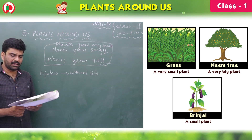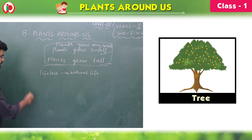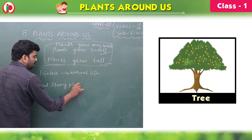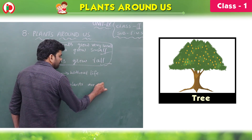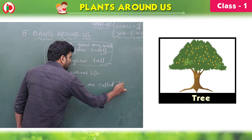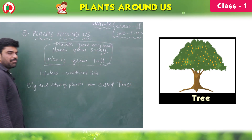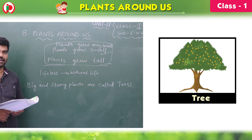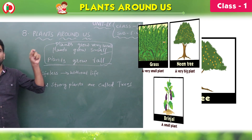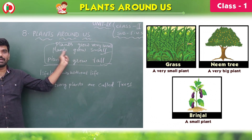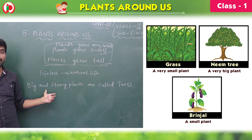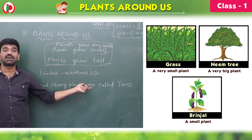Some plants are very big. Big and strong plants are called trees — like banyan tree, mango tree, neem tree, tamarind. All these are very big and strong. Some plants grow tall, some grow small, some grow very small, but big and strong plants are called trees.